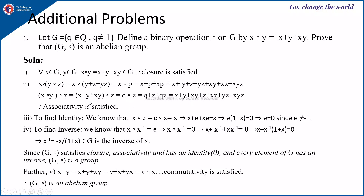To find the identity element E: x∘E = E∘x = x expands to x + E + xE = x. Cancelling x from both sides gives E + xE = E(1+x) = 0. Since x ≠ -1, we must have E = 0. Therefore, the identity element is 0.